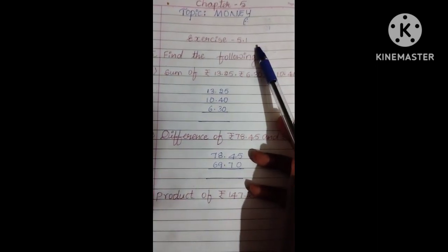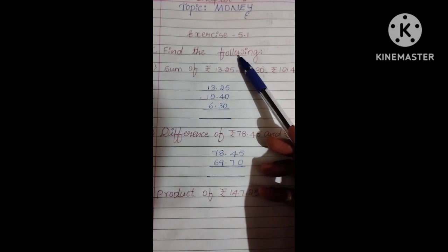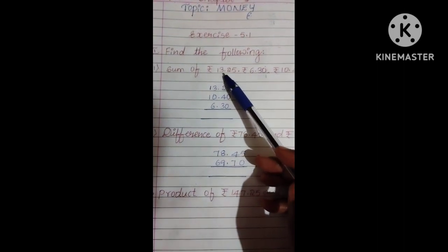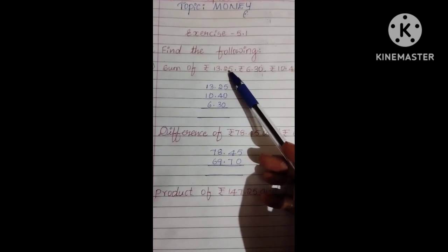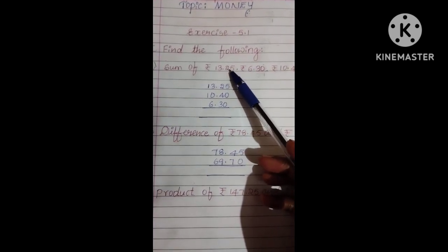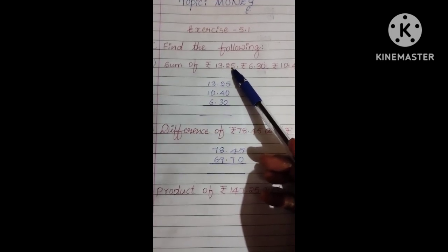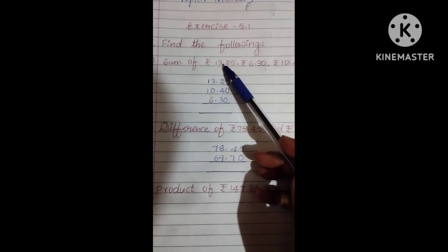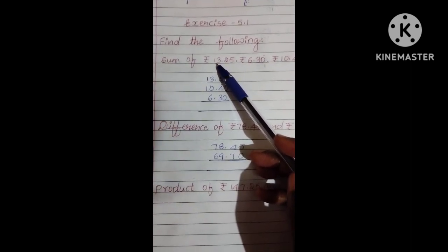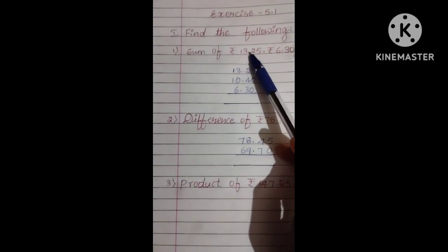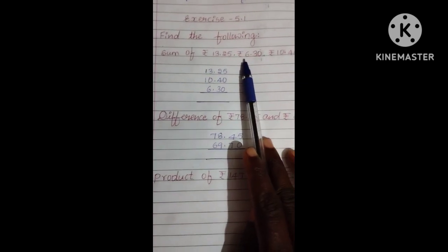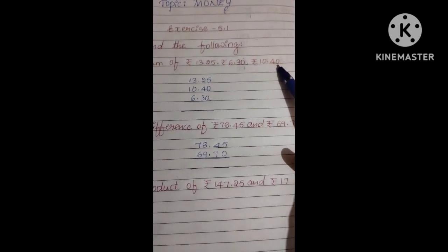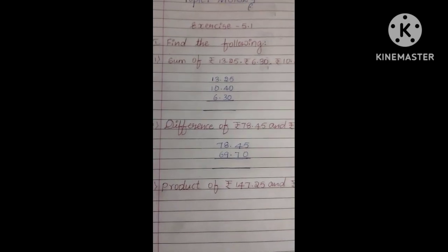Exercise 5.1 Find the following. First question, Sum of Rupees 13.25 paise. After point we can know this is paise. Before point, we have Rupees. 13 Rupees 25 paise and 6 Rupees 35 paise and 10 Rupees 45 paise. We need to add now. See here.